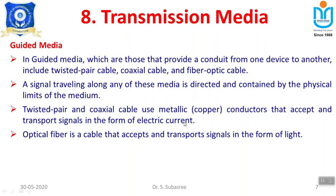Twisted pair and coaxial cable transfer information in the form of electric current. The third category is optical fiber — a cable that accepts and transports signals in the form of light. We know that optical fiber is much faster compared to twisted pair or coaxial cable, but the cost of implementation of optical fiber is very high.